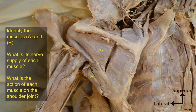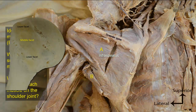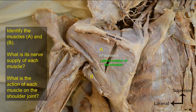Identify muscles A and B, their nerve supply, and their action on the shoulder joint. Muscle A is infraspinatus, seen below the spine of the scapula, arising from the infraspinous fossa. Following the tendon, it passes behind the shoulder joint to attach to the middle facet on the greater tubercle of the humerus — making it a lateral rotator of the humerus and part of the rotator cuff. It is supplied by the suprascapular nerve, which passes through the supraspinous fossa to supply supraspinatus and then enters the infraspinous fossa to supply infraspinatus.